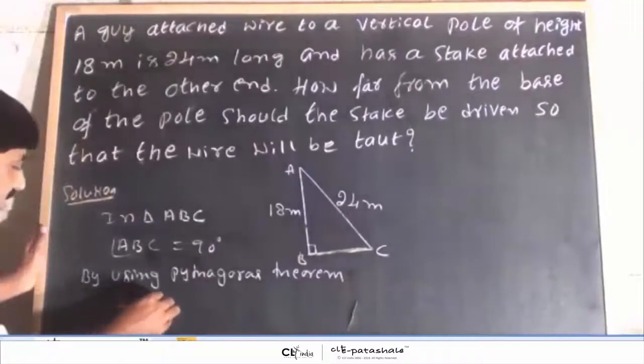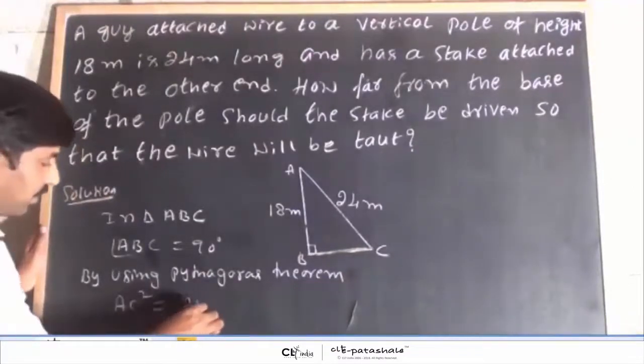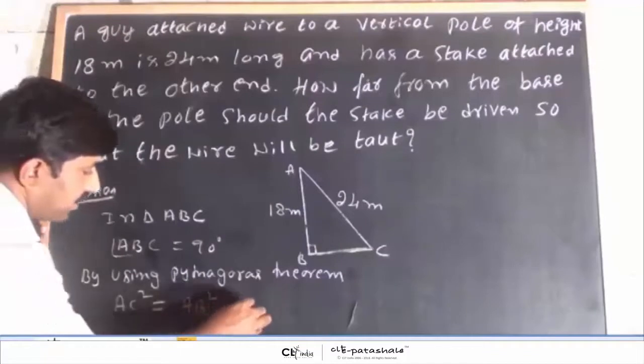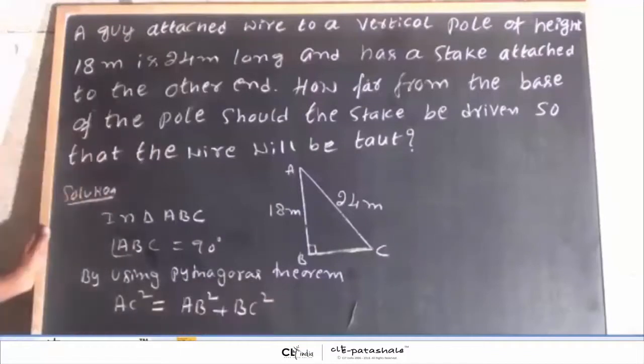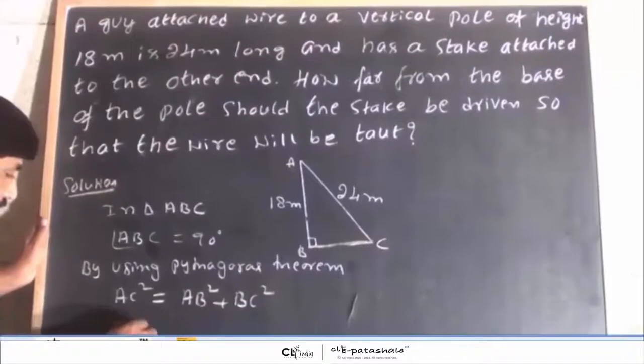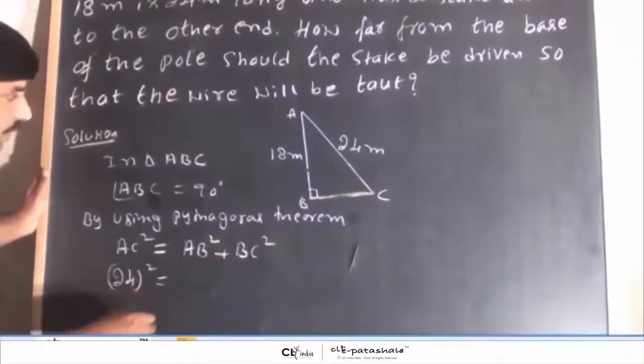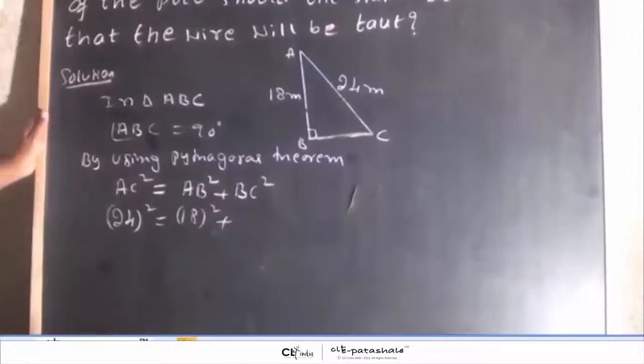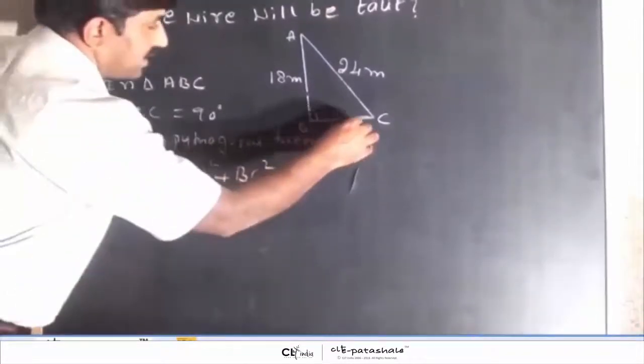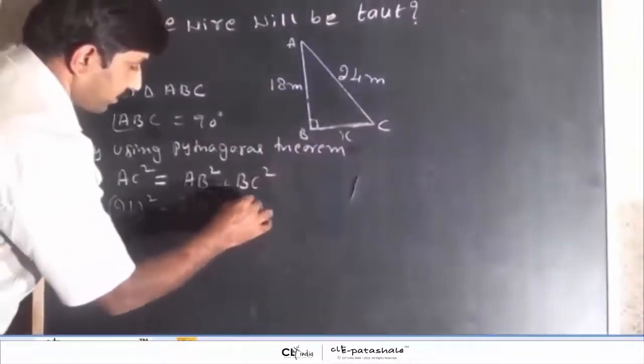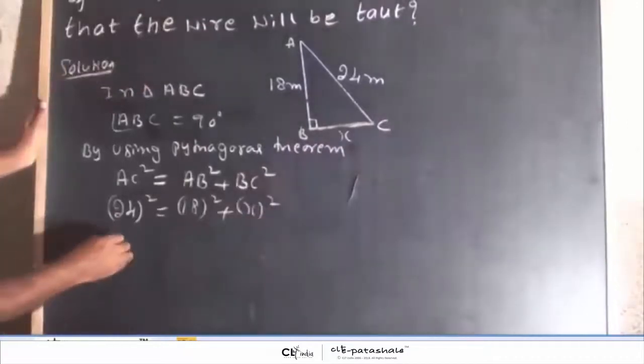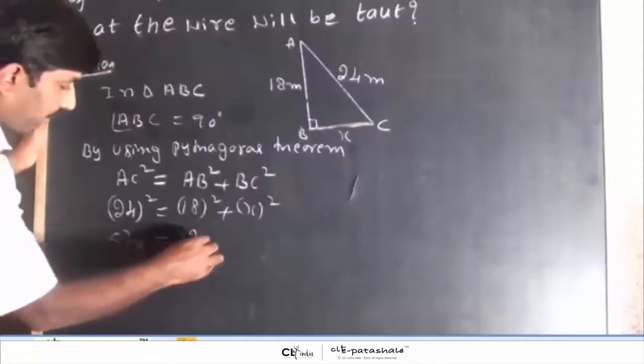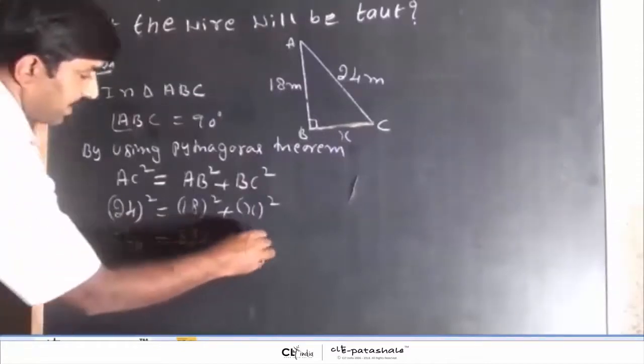By using Pythagoras theorem, AC square is equal to AB square plus BC square. Here AC is given 24, so 24 square is equal to AB is given 18 square plus we are going to find out BC, take it as x, x square. 24 square is 576 is equal to 18 square is 324 plus x square.